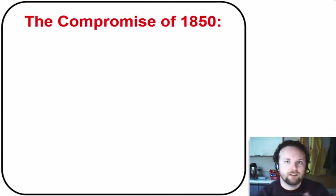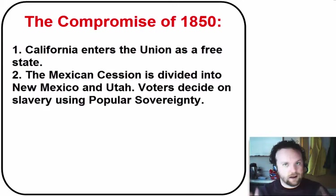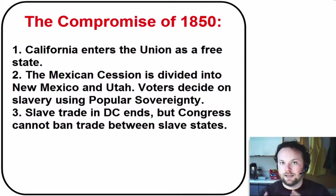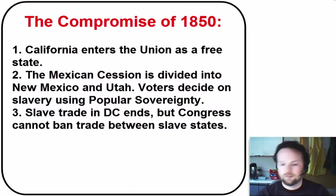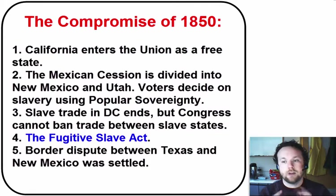The Compromise of 1850 had five major parts. First, California would enter the Union as a free state. Second, the rest of the Mexican cession was divided into the territories of New Mexico and Utah, and voters in each territory would decide about slavery for themselves — popular sovereignty. Number three, the slave trade in Washington, D.C. would end, but Congress would have no power to ban trade between slave states. Number four, a very strict fugitive slave law was included. And number five, the Compromise of 1850 would settle a border dispute between Texas and New Mexico.